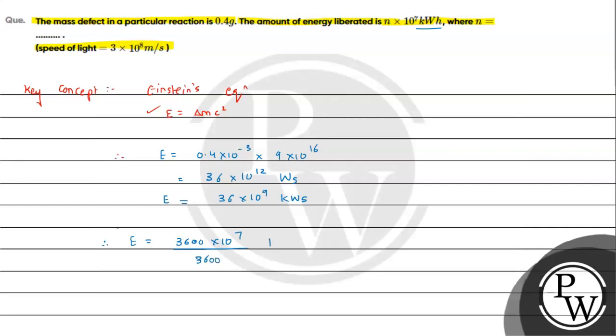So it will be kilowatt hour. So here as we can see, after canceling, the final answer is 1 into 10 raised to 7 kilowatt hour. So on comparing we can say the value of n will be 1. So this is the answer for the question. I hope you understood the solution. All the best.